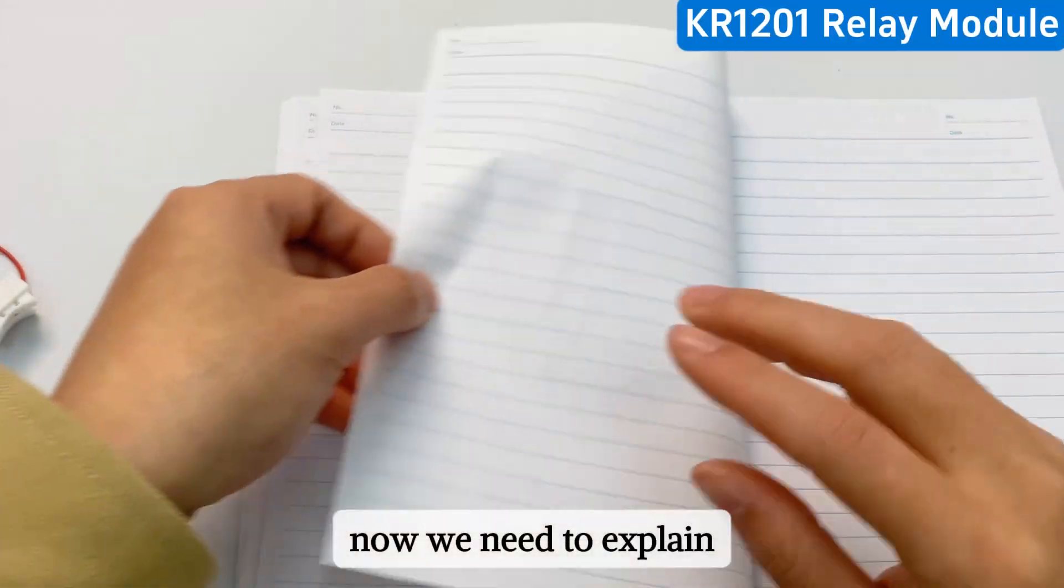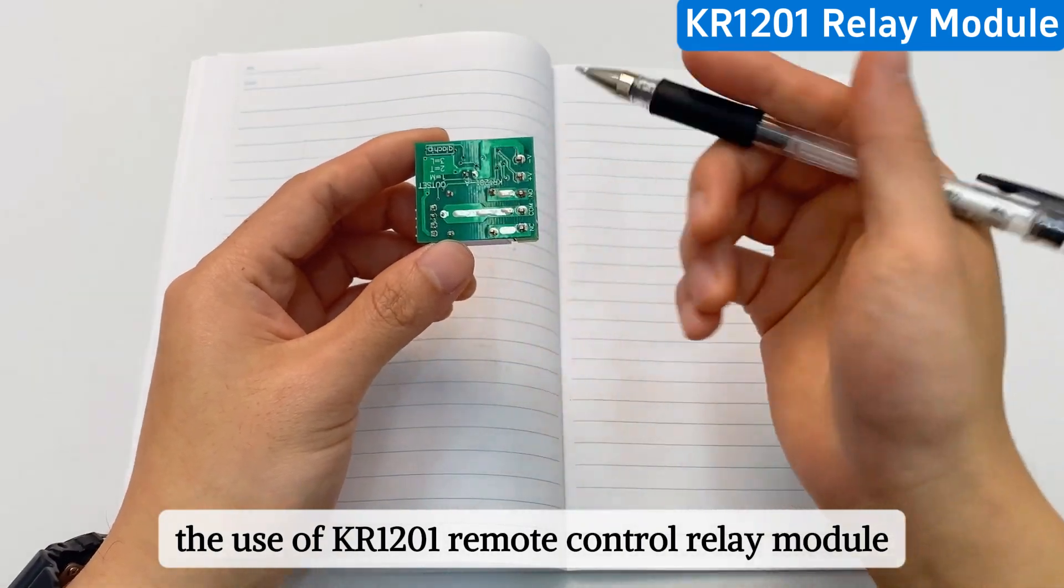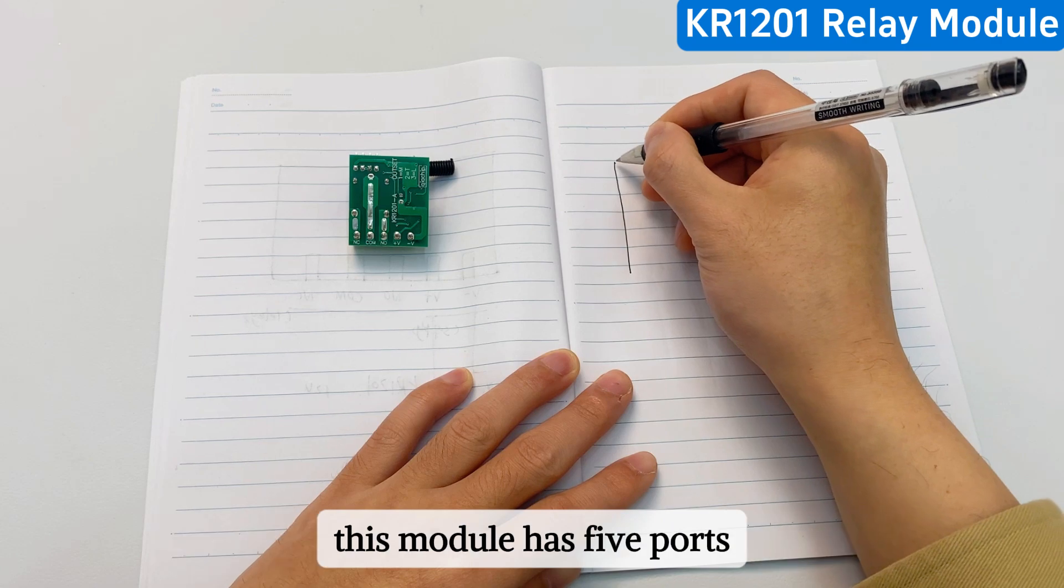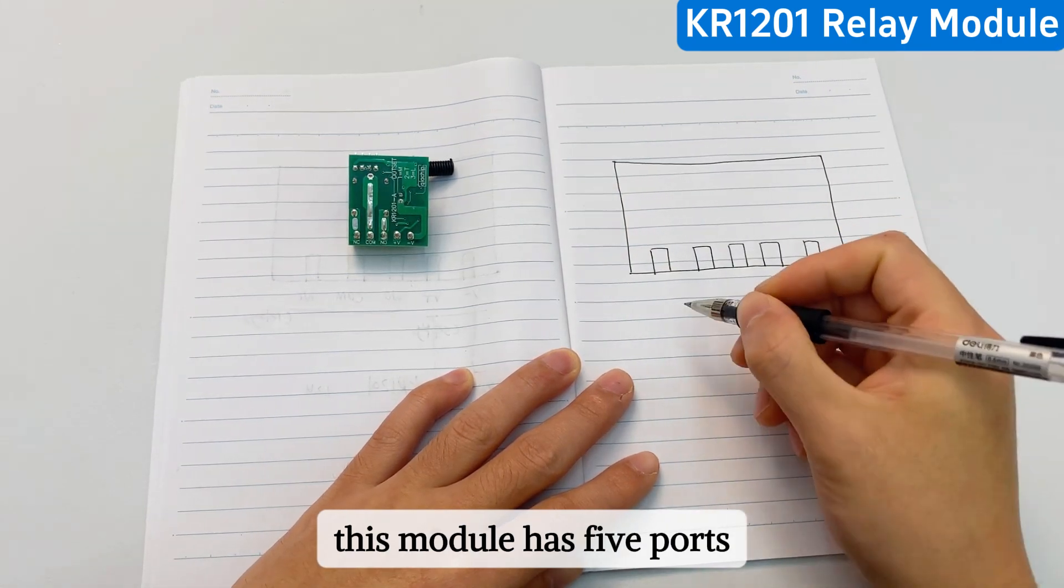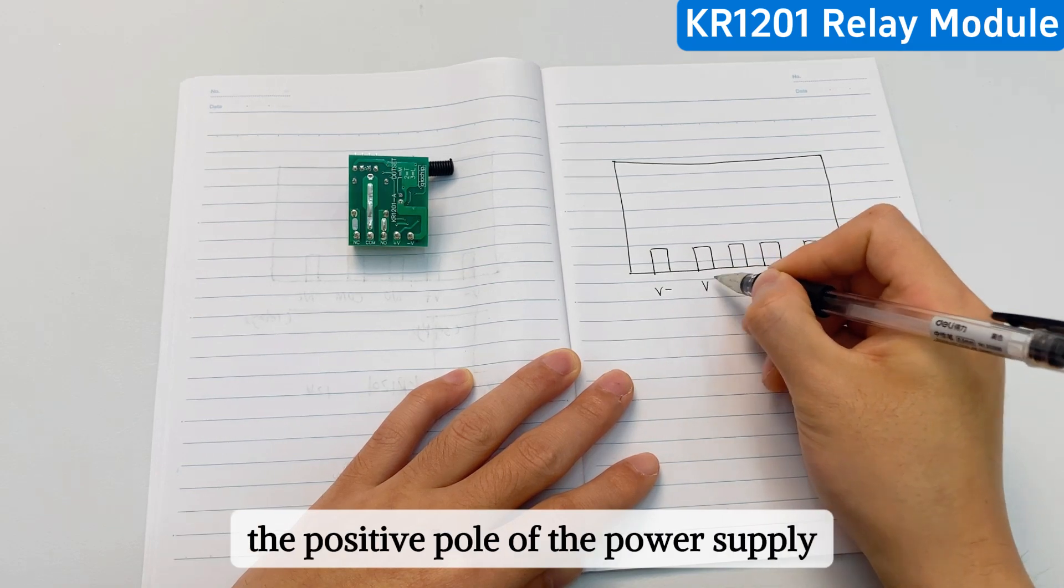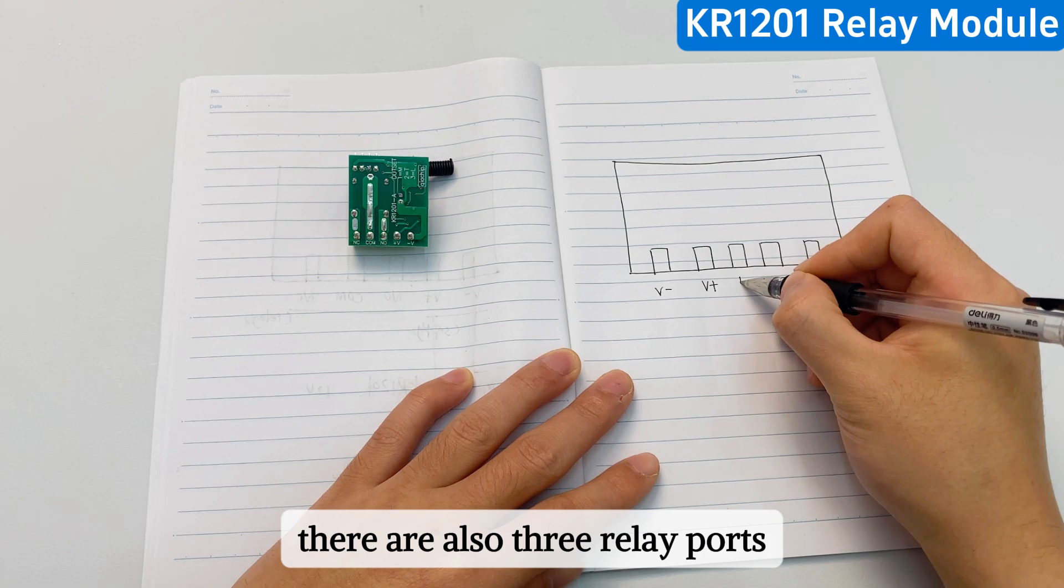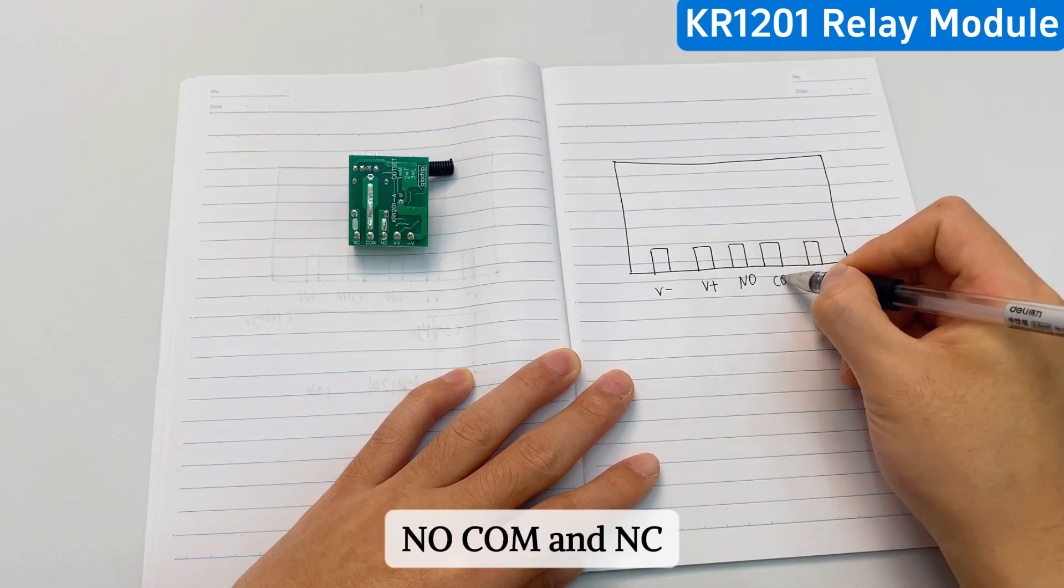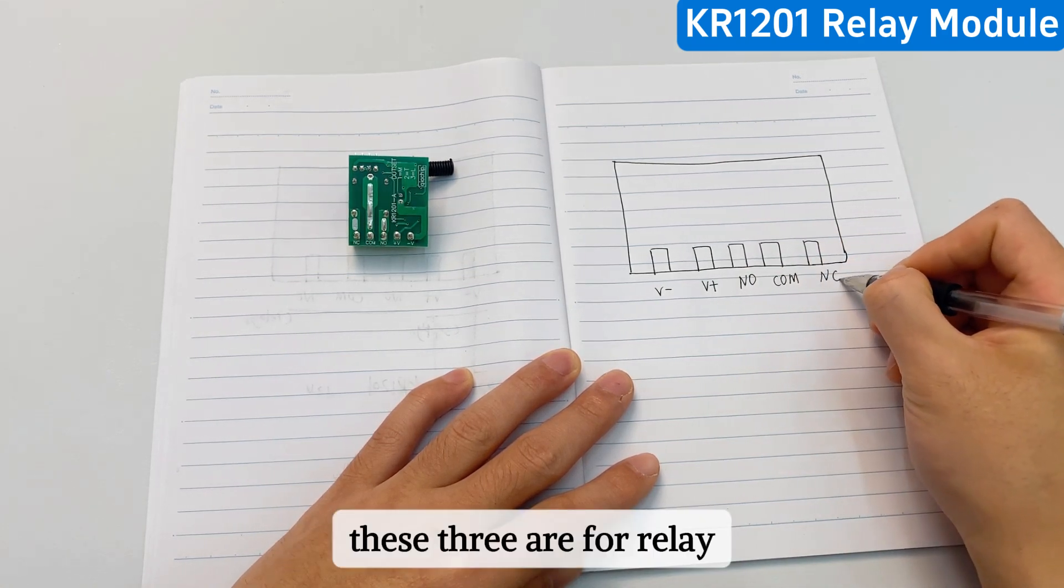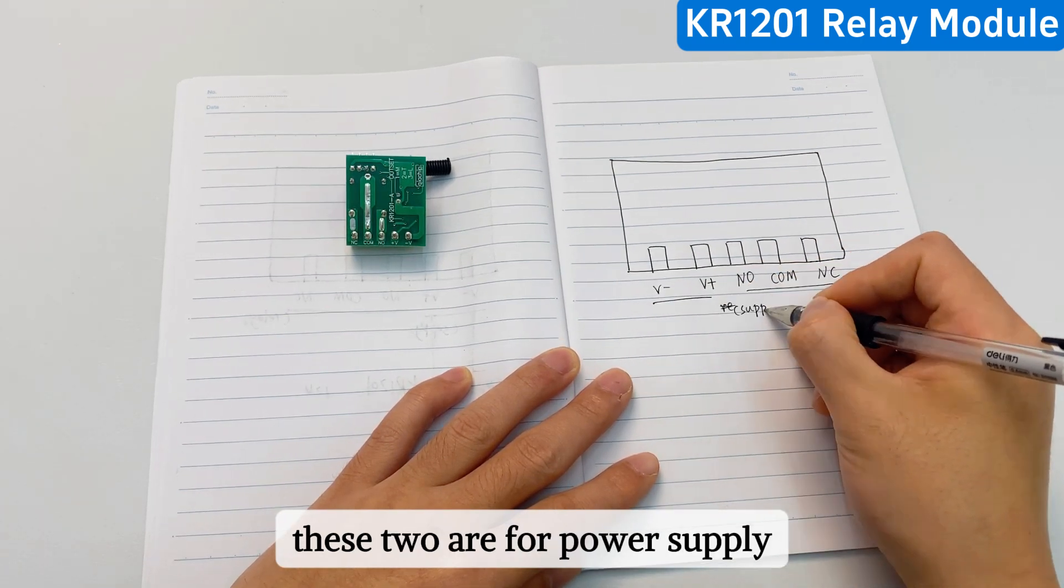Now we need to explain the use of KR-1201 remote control relay module. This module has five ports. They are the negative pole of the power supply, the positive pole of the power supply. There are also three relay ports: NO, com, and NC. These three are for relays. These two are for power supply.